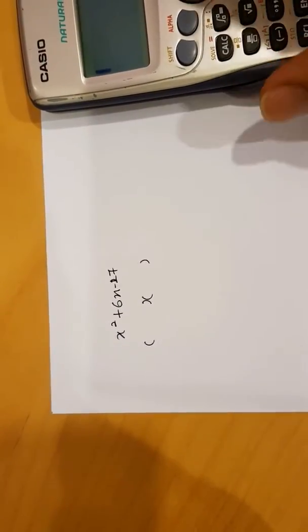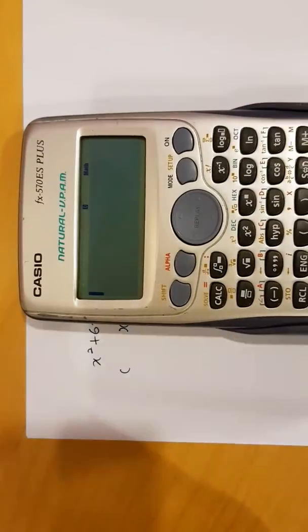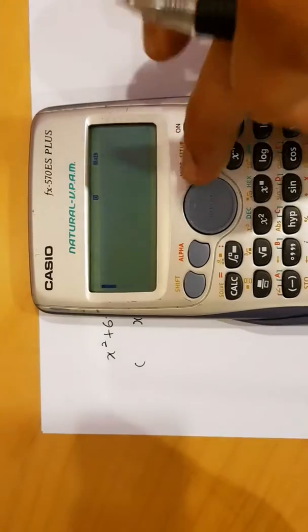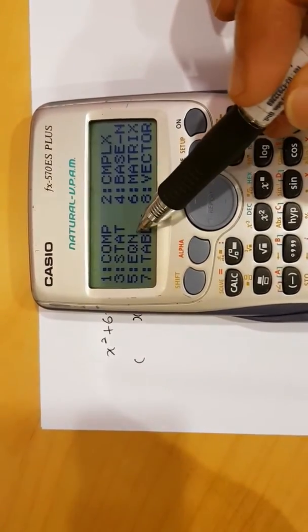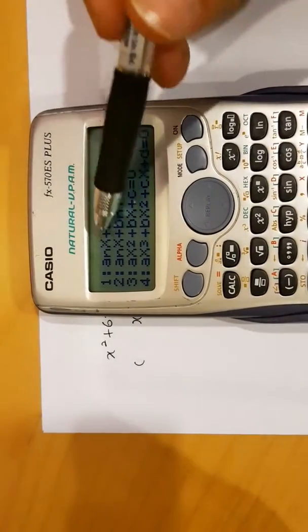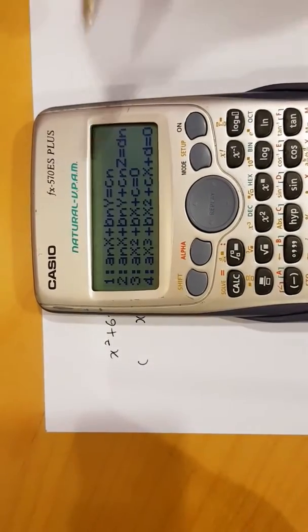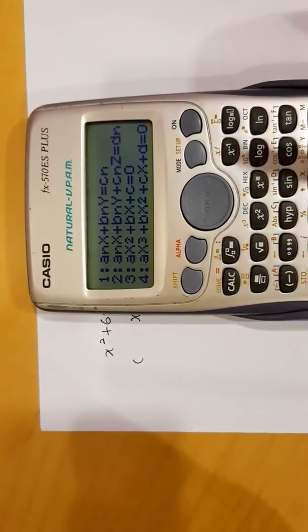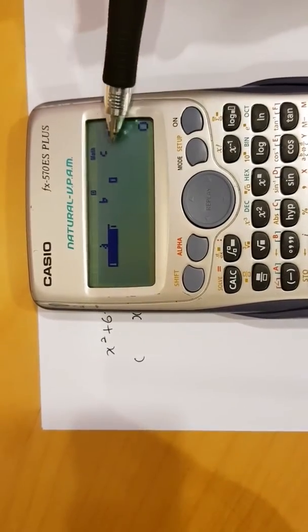The easiest way is by using the calculator and we can do that by using this mode here. We go ahead and press mode and you will see that there is this EQN, number 5. Go ahead and press 5 and you will see 1, 2, 3 and 4. For factorization, you will have to select number 3. Go ahead and press number 3 and you will see that you have got A, B and C.